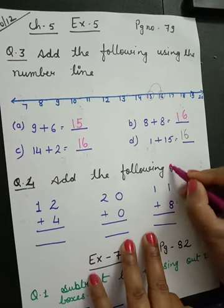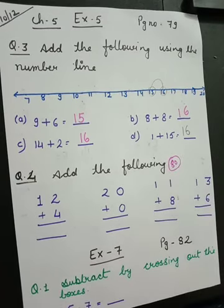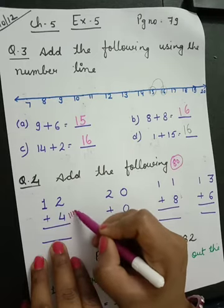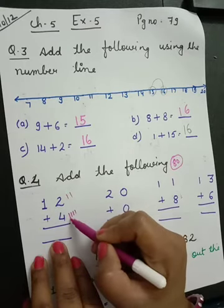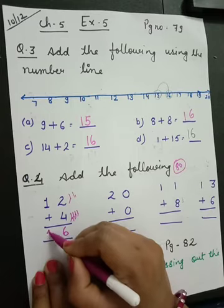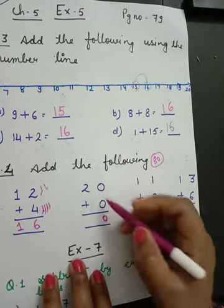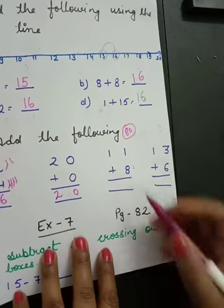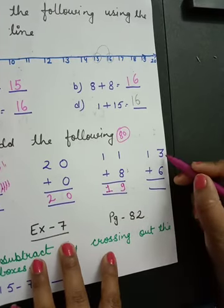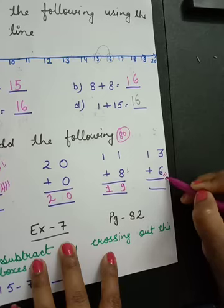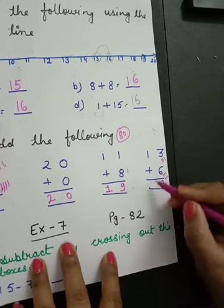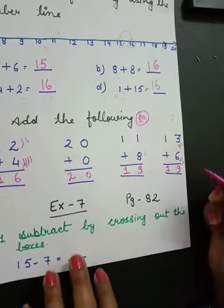Now look. Open page number 80. Page number 80. 2 plus 4: count 1, 2, 3, 4, 5, 6 — got it, 6. Then 0 plus 0 equals 0, and 2 plus 2. Then 8 plus 1 equals 9. 6 plus 3: count 1, 2, 3, 4, 5, 6 and then 1, 2, 3 — 6 plus 3 equals 9. In this way you have to do practice.